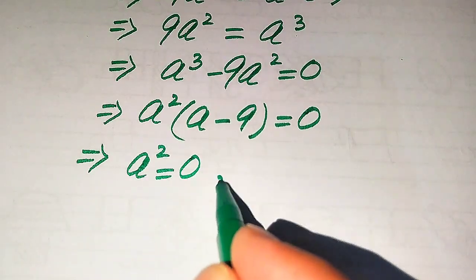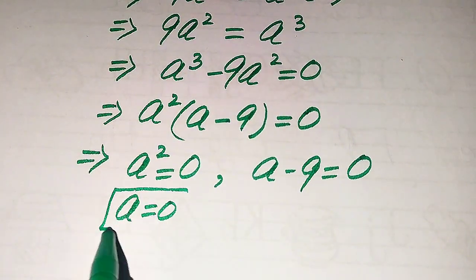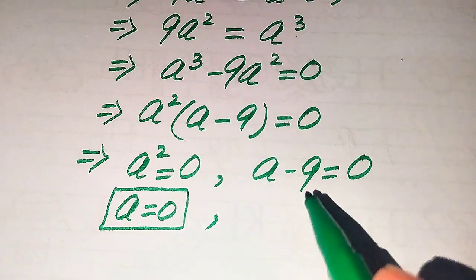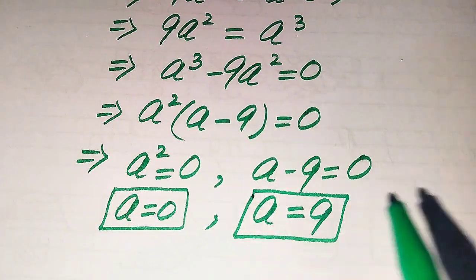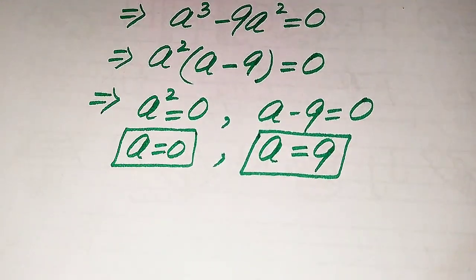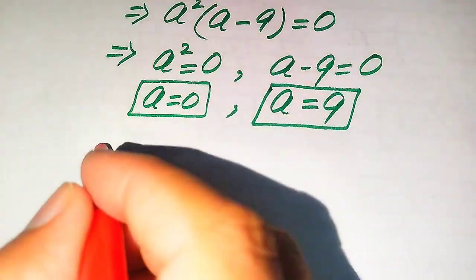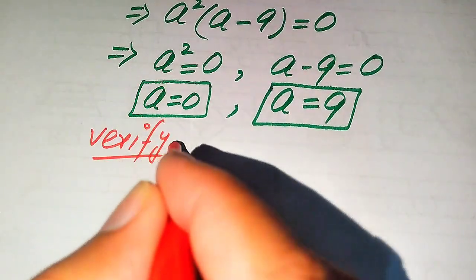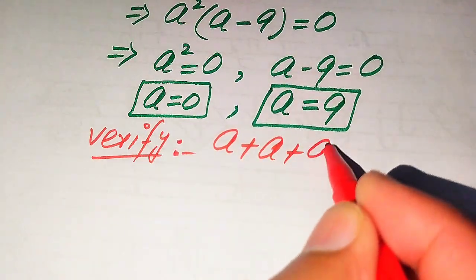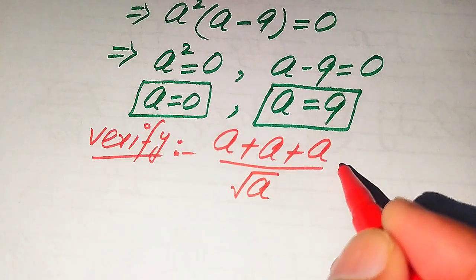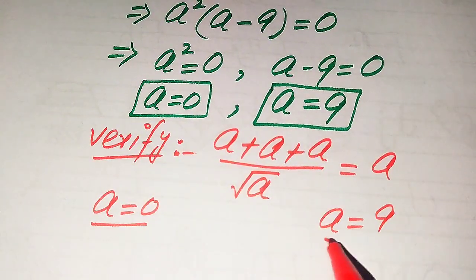Factoring gives a²(a minus 9) = 0. This splits into two cases: a² = 0 and a minus 9 = 0. From the first case we get a = 0 as our first root. From the second case, moving -9 to the right gives a = 9 as our second root. Now we verify whether these roots are solutions or extraneous roots by substituting back into the original equation: a plus a plus a divided by square root of a equals a.